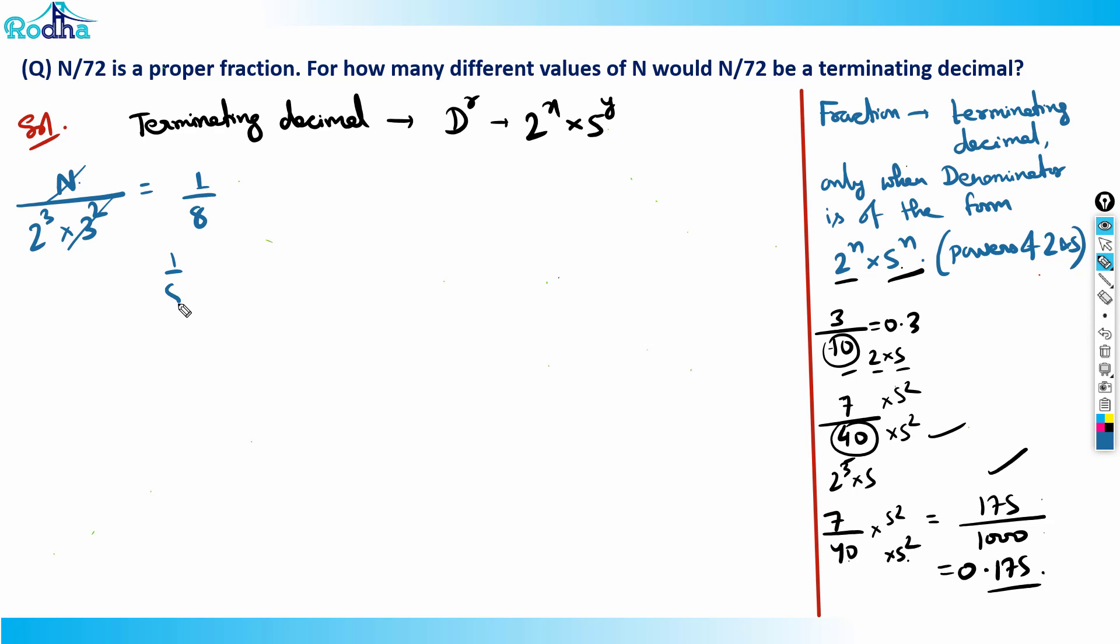See, 1/8 is 1/2³. That means I can change it to the nearest power of 10 by multiplying by 5³. That becomes 5³/1000, which becomes 0.125.